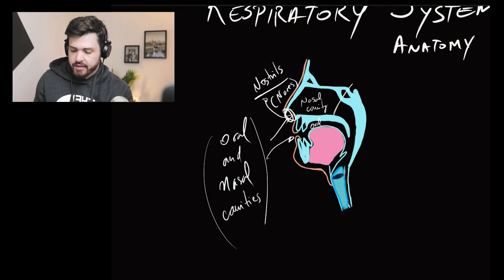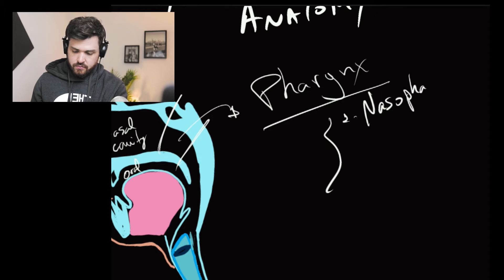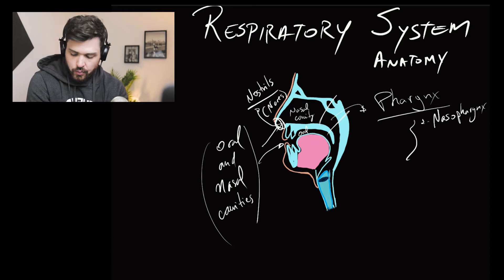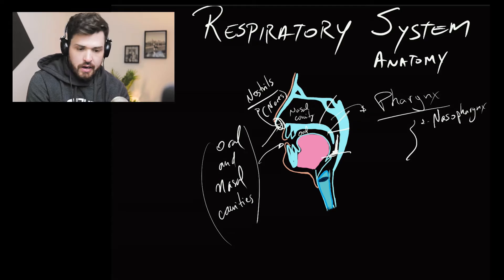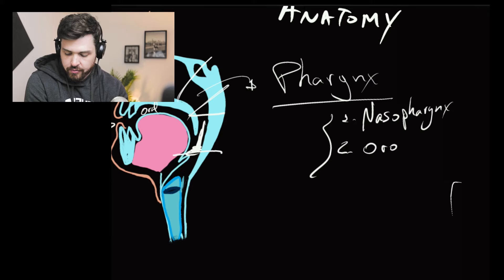Logo após the nasal cavity, começa a faringe, que de forma geral é the pharynx. However, na parte ainda nasal, nós temos a nasal pharynx. Logo após a nasal pharynx, nós temos a parte mais próxima da região oral. We have the oropharynx.